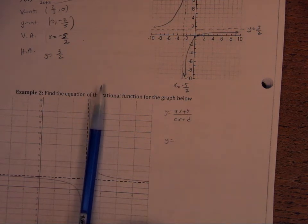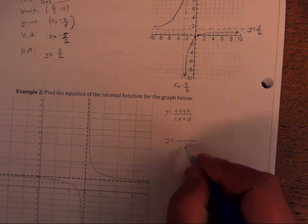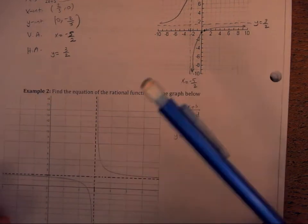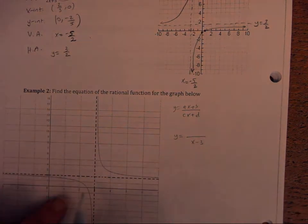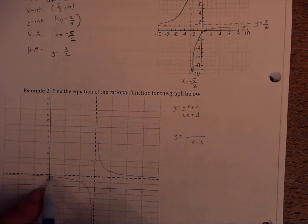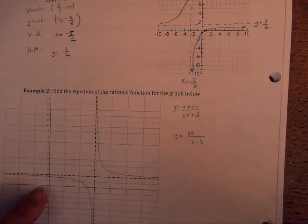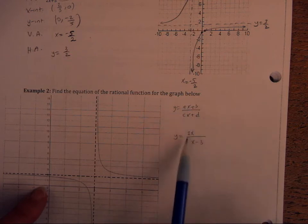We can use the vertical asymptote, horizontal asymptote, x-intercept, and any point with integer coordinates to find A, B, C, and D. The vertical asymptote is at x equals 3, so the denominator must contain x minus 3. That gives us C and D. The horizontal asymptote is at y equals 2, so the leading coefficient of the numerator must be 2, giving us 2x in the numerator — meaning A equals 2.